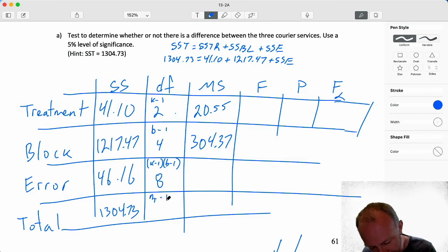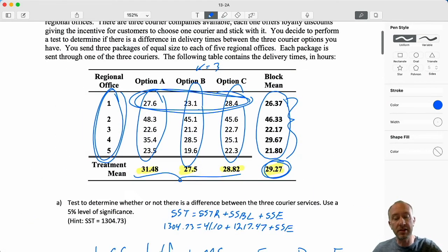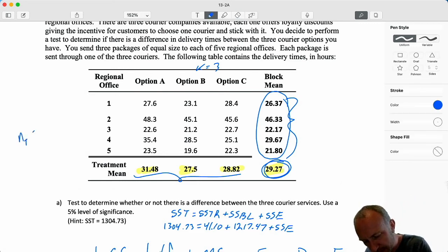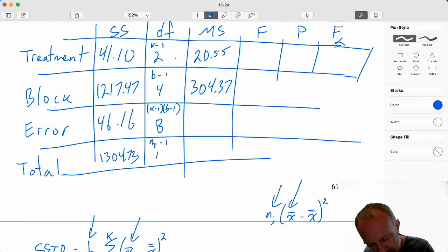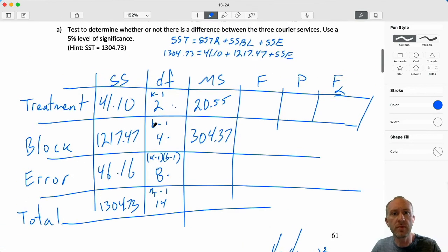Degrees of freedom total. Again, this one's always the same. nt minus one. So when I come up here, I see I have three treatments, each one with five observations. So nt is equal to 15, so that's 15 minus one. So there's 14. And that's also eight plus four plus two, right? It's always the sum of the degrees of freedom above it.